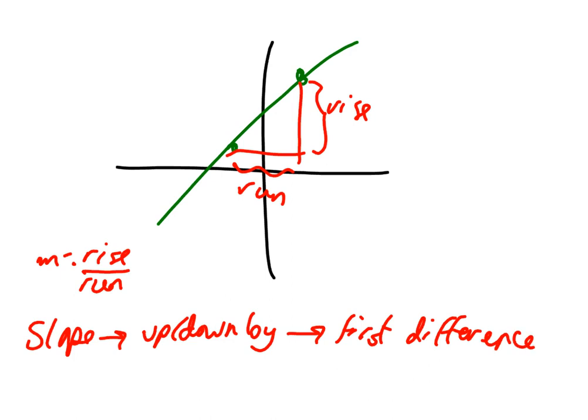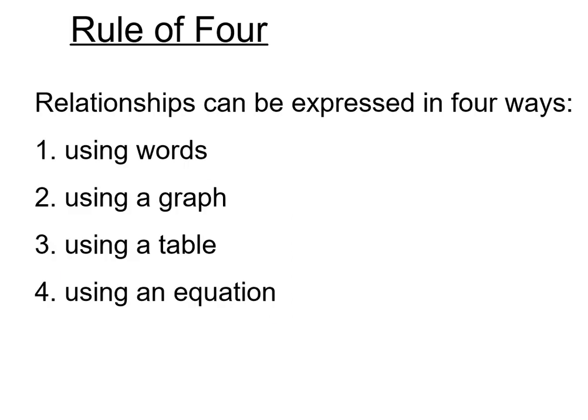Now we're going to put this all together in something called the Rule of Four. The Rule of Four is simply combining everything we've learned and realizing that relationships can be expressed in four different ways: using words, a graph, a table, and an equation. When we talk about a table, we remember the beginning of all of this was looking at patterns, so technically you could go from a pattern to a table.